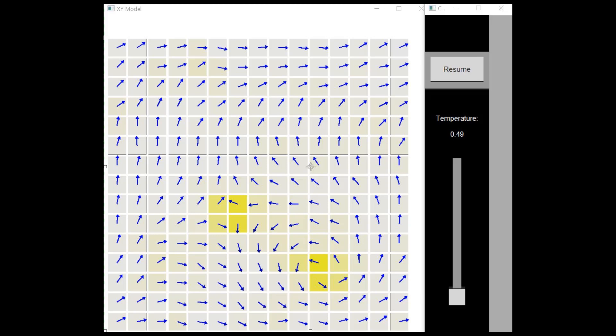In the XY model, positive and negative vortices always occur in pairs. In this visualization, the shade of yellow of each spin's square or background is proportional to the Hamiltonian of that particular site calculated with nearest neighbors.